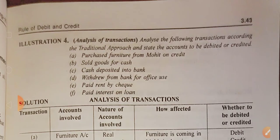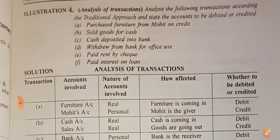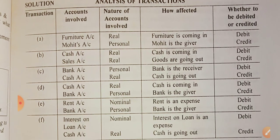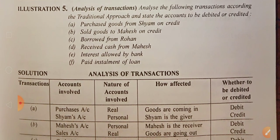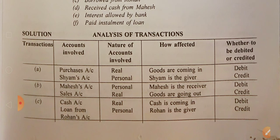Example transactions: purchased goods from Mohit — that is a personal account. Sales of goods for cash — that is a real account. Cash deposited into bank — bank is a personal account, cash is a real account. These are the basic concepts. You can also see this as a document in PDF form.